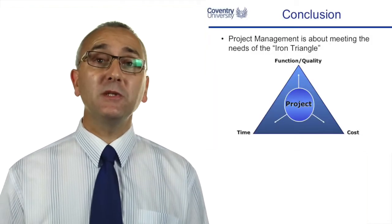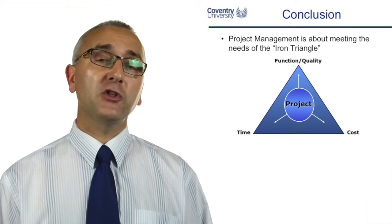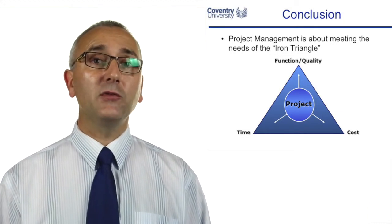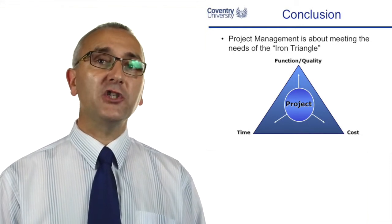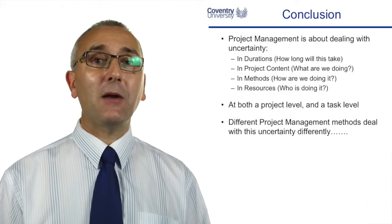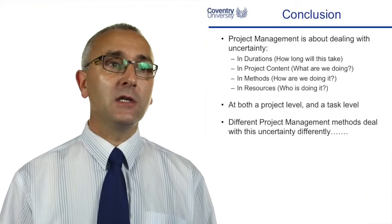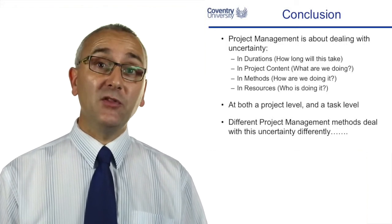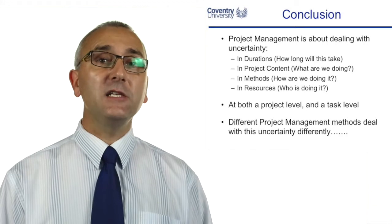Project management is about meeting time, cost and quality requirements. Traditional project management looks at quality first, then time, cost and resources. Agile and critical chain look at the time issue first — what can we achieve in a given time? Whichever method you use, it's about managing uncertainty: uncertainty in project durations, project methods, project resources, and project tasks. Different project management methods deal with that uncertainty in different ways.